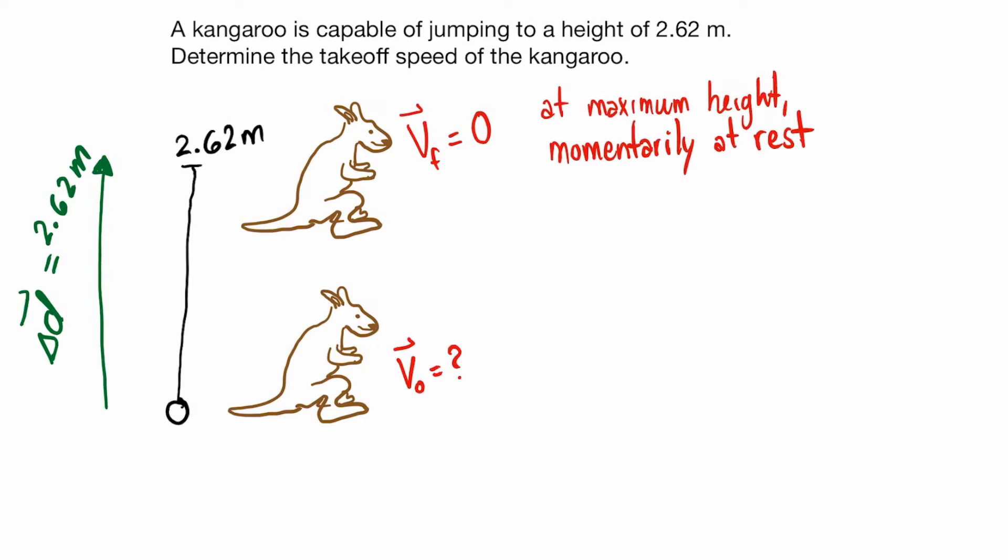And looking at our acceleration vector, because we are on the planet Earth, right? Maybe you're in Australia, and here Australia is on planet Earth, if you don't know. And our acceleration vector near the surface of the Earth points downwards. And we can approximate it to be negative 9.8 meters per second squared. Here we're taking that direction to be downwards for our acceleration vector, which is the reason why we put a negative in front of it.